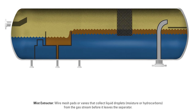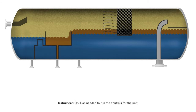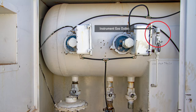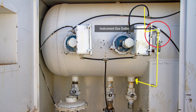There's a mist extractor inside the vessel located approximately here. The mist extractor extends just below the liquid level, which forces the flow of gas through the extractor. Instrument gas refers to the gas needed to run the controls for the unit. This half-inch line goes in and turns up, and that's where you'll get the highest, driest gas possible, which is what you want for instrument gas.